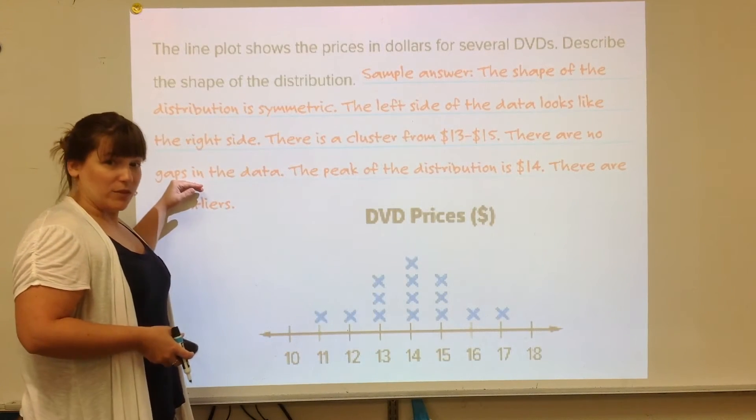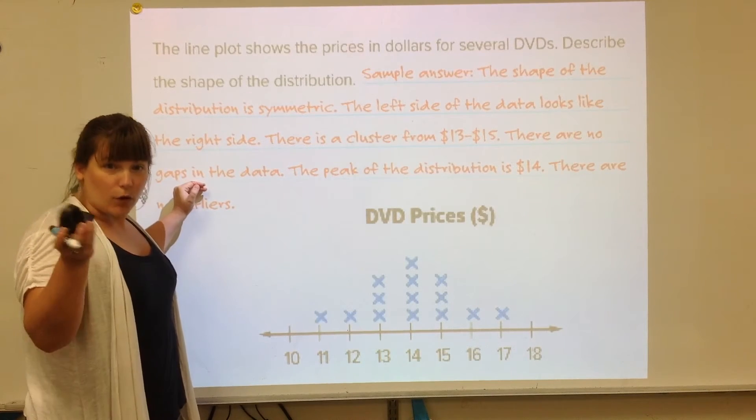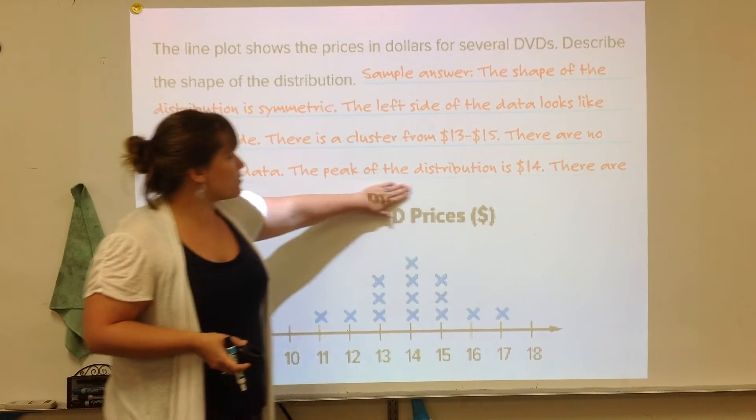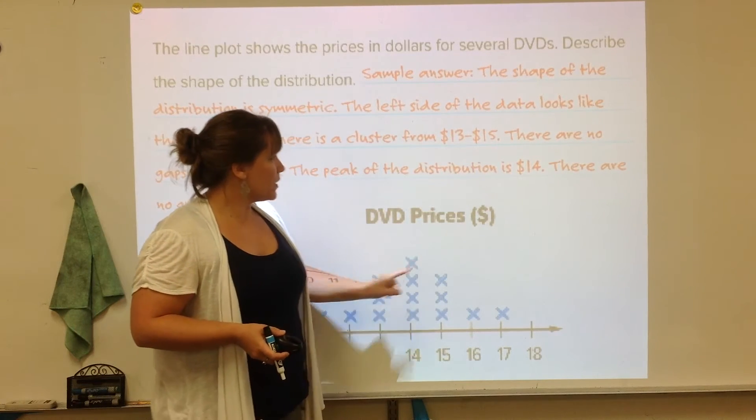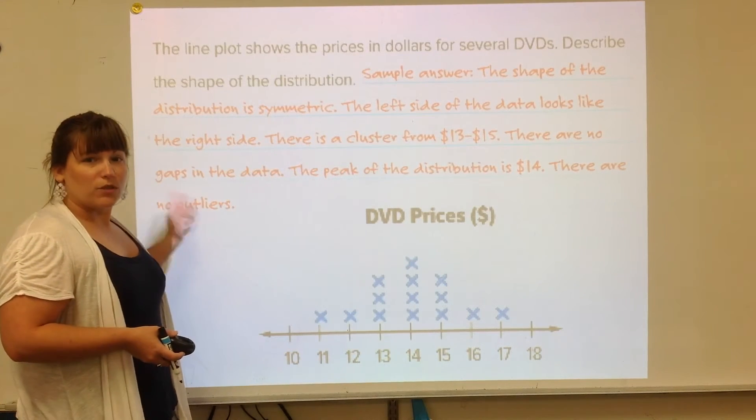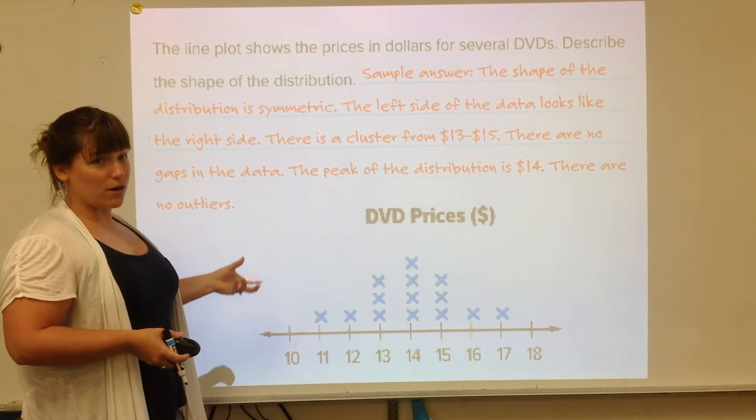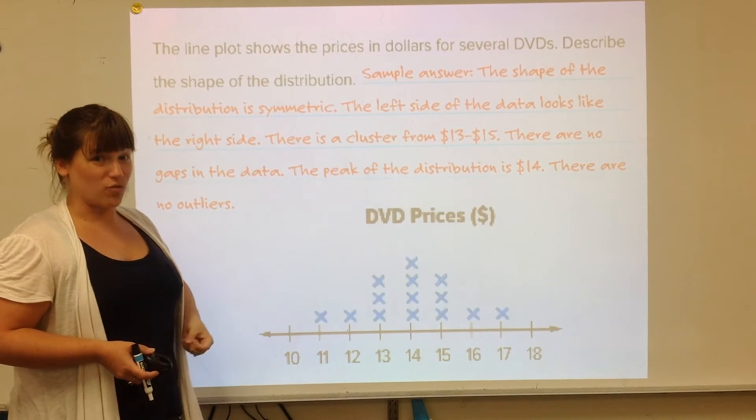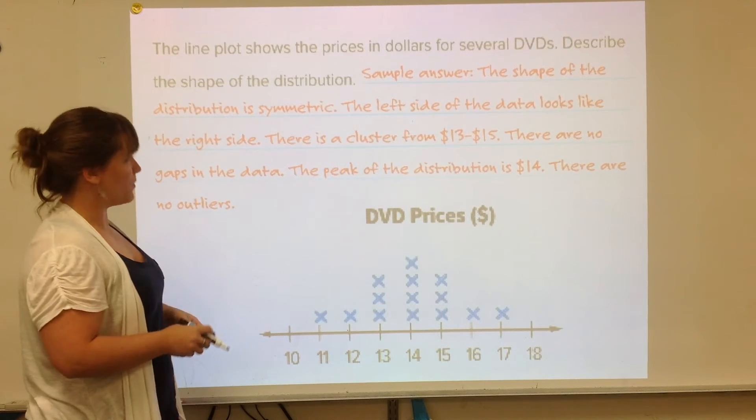And there are no gaps. If there are no gaps, you literally just say there are no gaps. And then talk about the peak. The peak of the distribution is at 14 dollars. And there are no outliers. So this is an example of how you can describe, notice there are a lot of sentences answering each one of those questions from your notes.